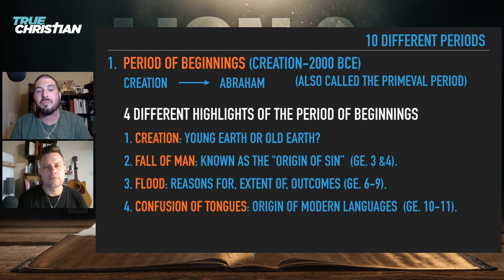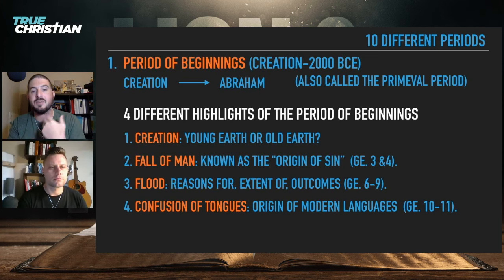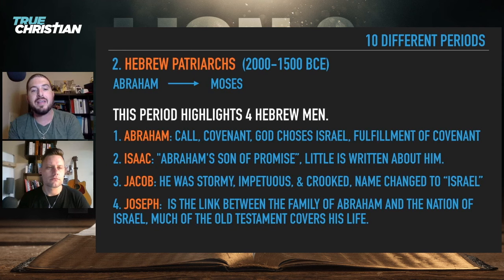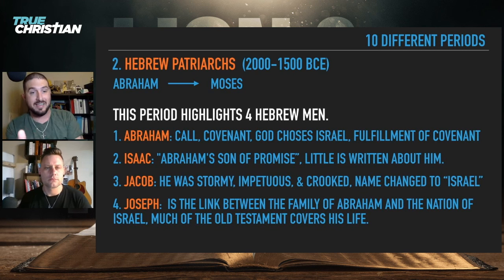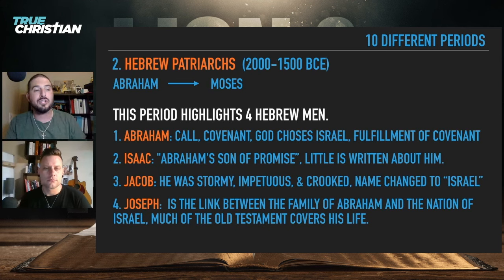The period of beginnings runs from creation to Abraham, with four highlights: creation, the fall of man, the flood, and the confusion of tongues. The Hebrew patriarchs run from 2000 to 1500 BCE, highlighting four men: Abraham, Isaac, Jacob, and Joseph. We serve the God of Abraham, Isaac, and Jacob. Joseph is actually not part of the seed that leads to Christ, but he plays an immense role — without Joseph's journey, we don't have David, we don't have Jesus.